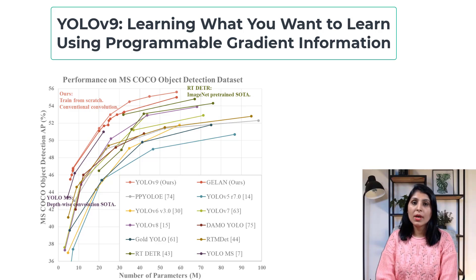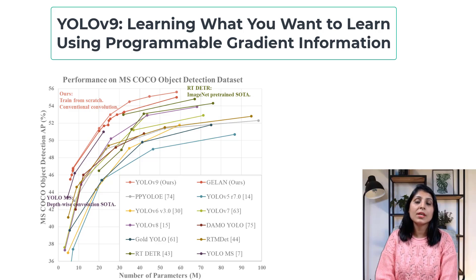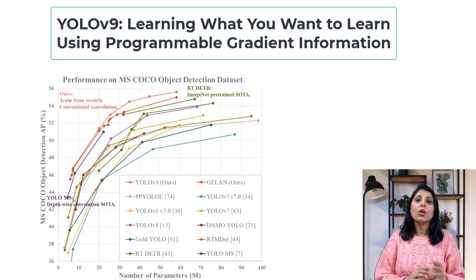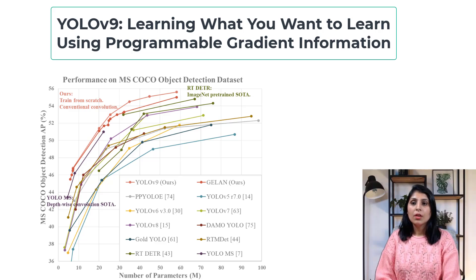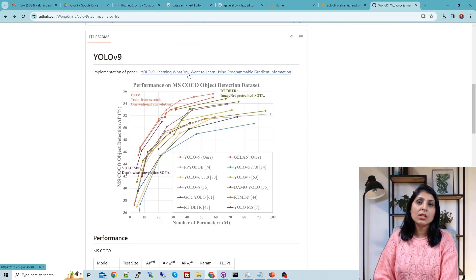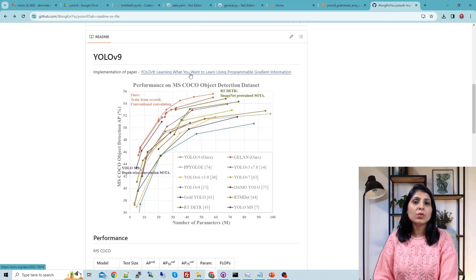Hello everyone, my name is Arohi and welcome to my channel. YOLOv9 has been released and it beats real-time detection transformer and YOLO-MS in speed and accuracy. Today I will show you how to use the YOLOv9 pre-trained model, and after that I will show you how to train your YOLOv9 model on a custom dataset. Let's start — first I'm showing you the GitHub repo of YOLOv9. This is the official GitHub repo, and here you can see the paper if you want to read more about it. My today's tutorial I will show you on Google Colab.